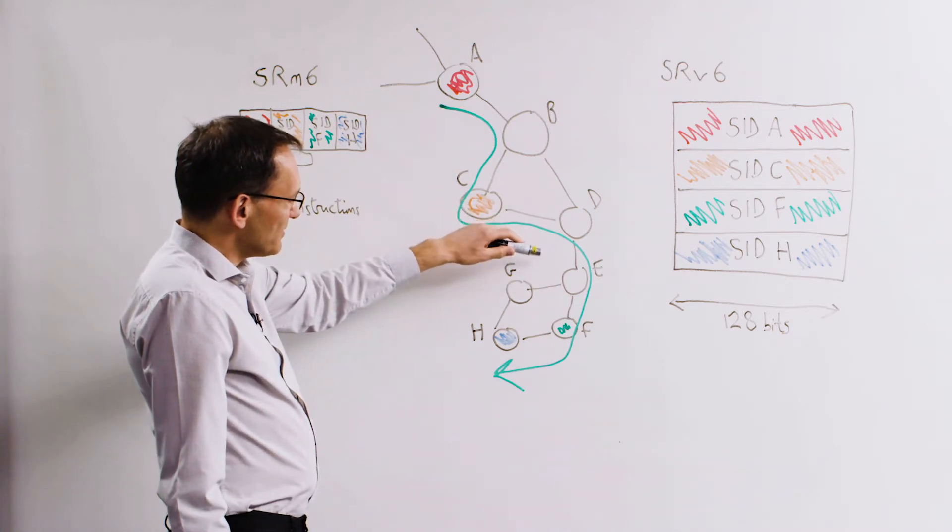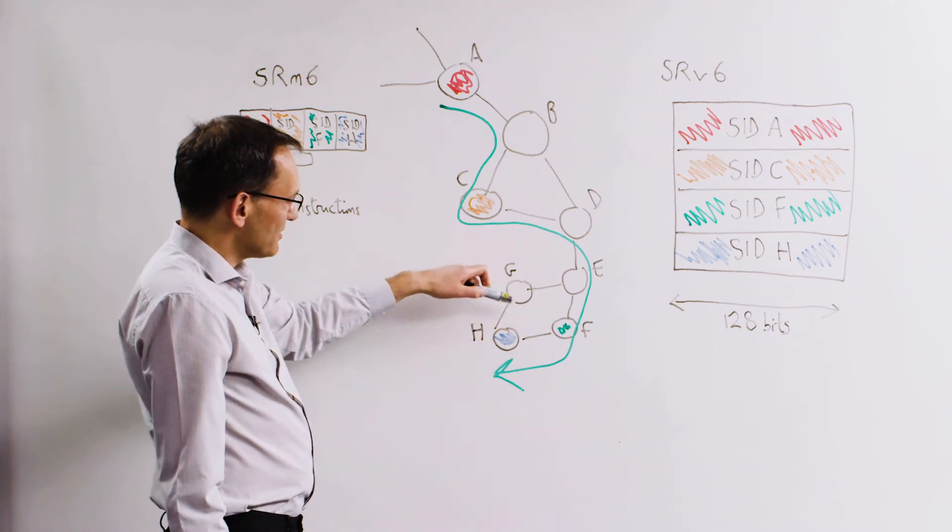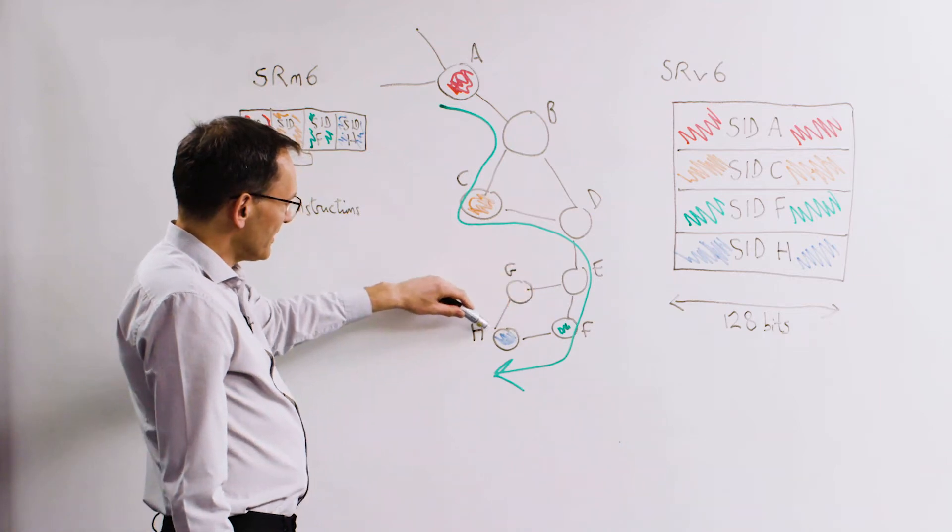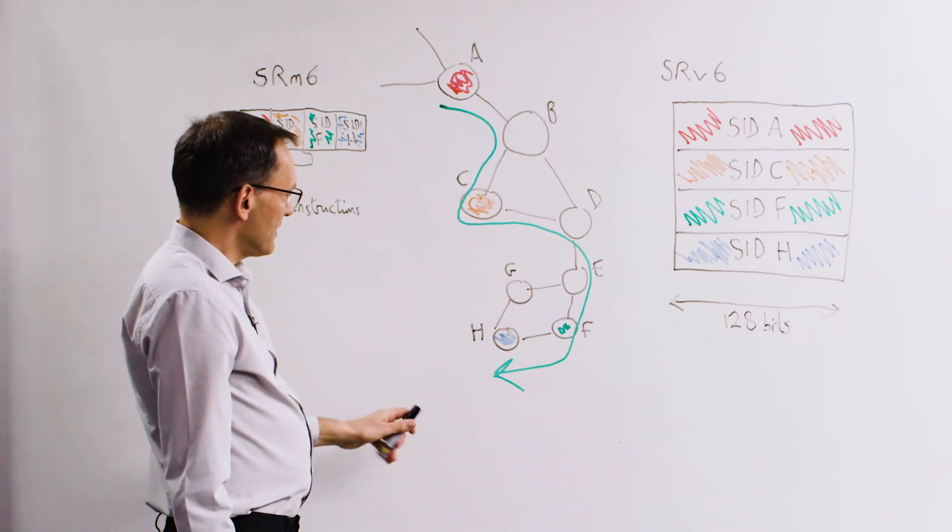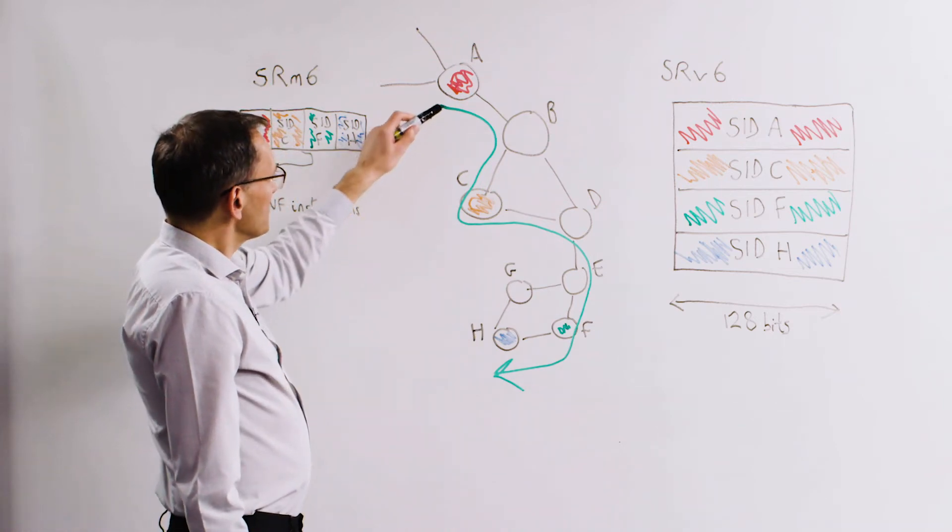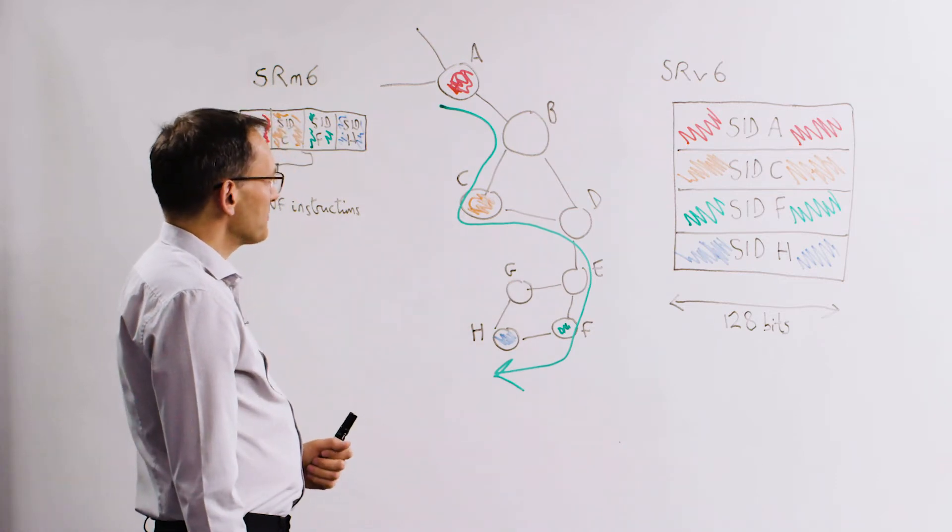When the traffic gets to E we want it to pass through F rather than G, and so F is a traffic engineering stop in terms of the SRV6 processing. And finally the traffic arrives at node H where there's also some VNF processing occurring. So overall, the dots that are color coded are the SRV6 processing nodes.